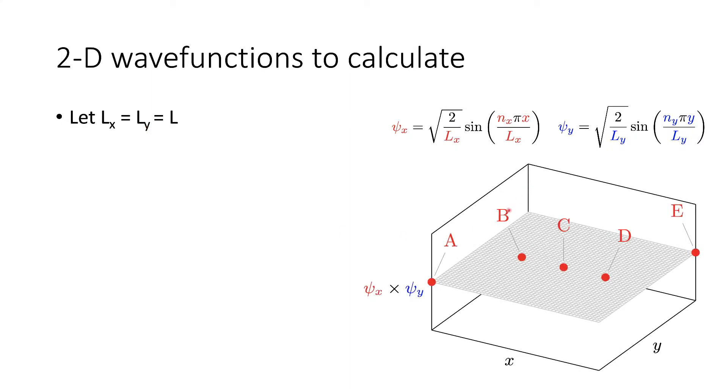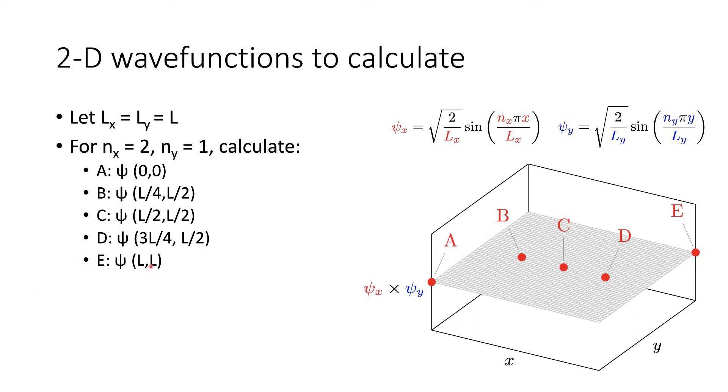So let's picture our square box, or square plane rather. So this plane here is square. We're looking at it in perspective view. We want to try and calculate what the value of the wave function will be at each of these coordinates: A, B, C, D, and E. For simplicity, we're just going to let the quantum number of x be 2 and the quantum number of y be 1. And we're going to calculate the value of the wave function at point A at coordinate (0,0), point B at coordinates L/4 in the x direction and L/2 in the y direction, C at L/2 in both directions, D at 3L/4 in the x direction and L/2 in the y direction, and E at the (L,L) coordinate.